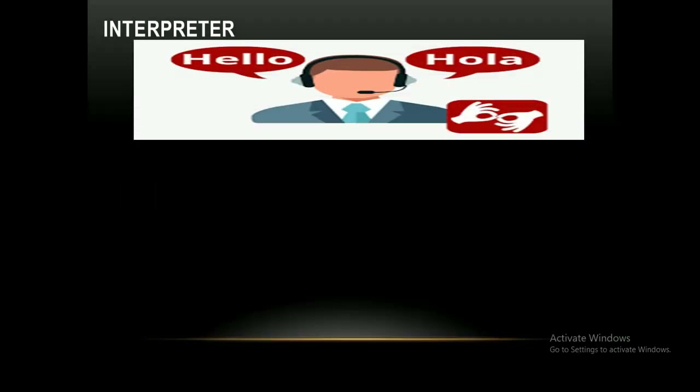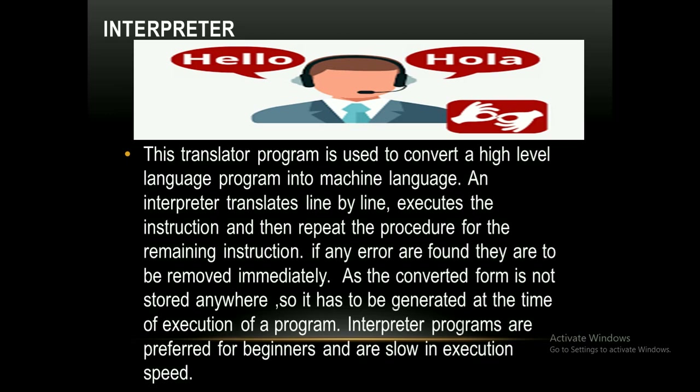An interpreter translates high-level language programs into machine language, similar to how one interprets English into Spanish. An interpreter translates line by line, executes the instruction, and then repeats the procedure for the remaining instructions. If any errors are found they must be removed immediately. Since the converted form is not stored anywhere, it has to be generated at the time of execution. Interpreter programs are preferred for beginners but are slow in execution speed.